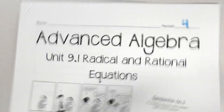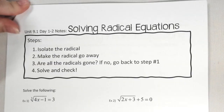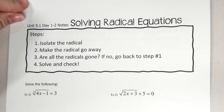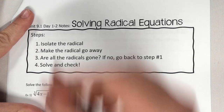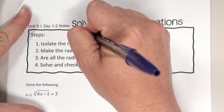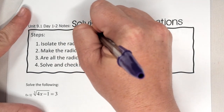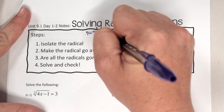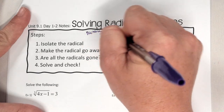We are starting unit 9.1, day 1 through 2: solving radical equations. Two things you need to remember in this unit is factoring. With factoring, we do the snowflake method.